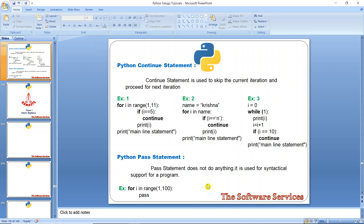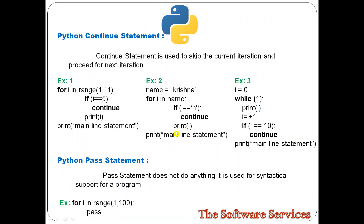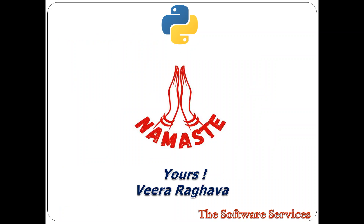So, with this we have completed loop control statements: for loop, while loop, continue, break, and the pass statement for syntactical support. In the next class, we will enter into the concept of functions and functional programming. Thank you for listening. Namaste.